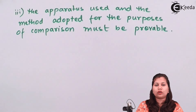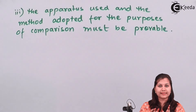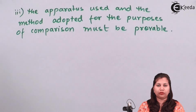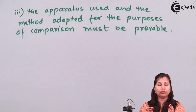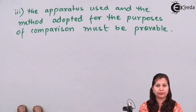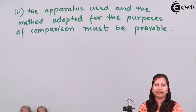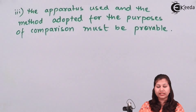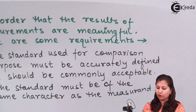The third requirement is that the apparatus or method used for the comparison must be provable — it must exist in reality and be practically verifiable. The apparatus should also be accurate, because only then will the measurement results be accurate. These are the three requirements to get meaningful results from a measurement.